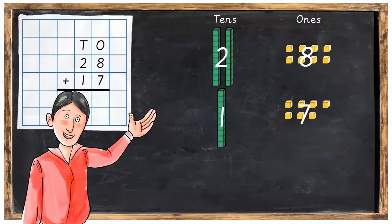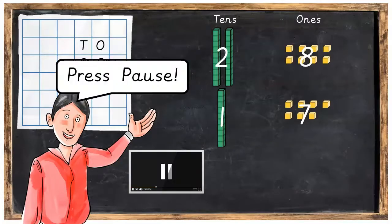What I'd like you to do now is set out your Dienes Blocks just like this, creating the 28 on top and the 17 directly underneath it. Press pause and when you're ready, press play again.